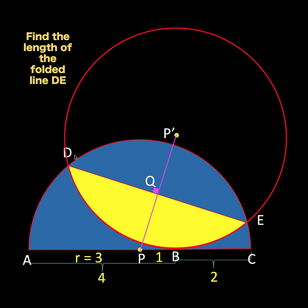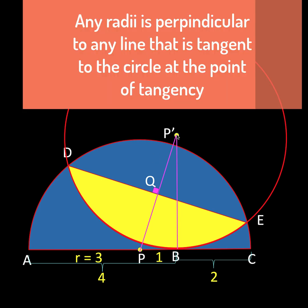Second, since the red circle contains this yellow circular segment of the original semicircle, the radii of the semicircle and of the red circle must be equal. If the radius of the blue semicircle is three units, then the radius of the red circle must also be three units.